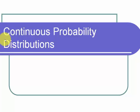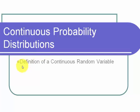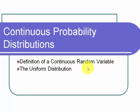This is a video on continuous probability distributions. I'm going to start out today by talking about the definition of a continuous random variable, and then we'll move on and talk about the simplest of all distributions for continuous random variables, called the uniform distribution.